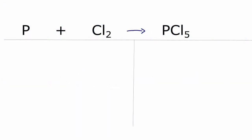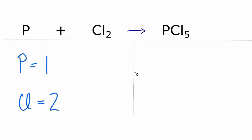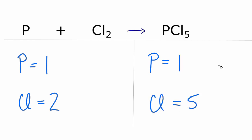First thing we do, we write down the atoms on each side. We have one phosphorus and two chlorine atoms on the reactant side. On the products side, we have one phosphorus and five chlorine atoms.